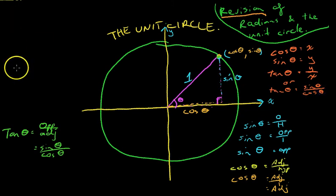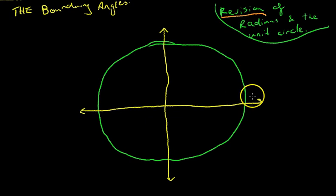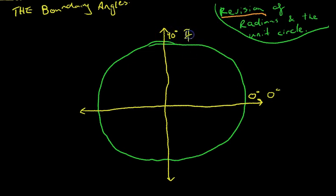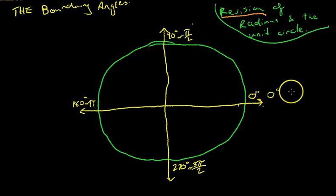Continuing on with our unit circle — for some of you I'll be introducing terminology, for some of you this is something you've heard before. I'm going to talk now about the boundary angles. The boundary angles are 0 degrees or 0 radians, 90 degrees or pi on 2 radians, 180 degrees or pi radians, 270 degrees or 3 pi on 2 radians, and 0 degrees or 360 degrees, which is 2 pi radians.